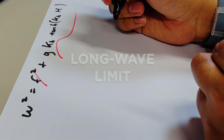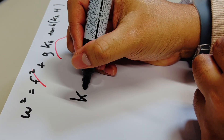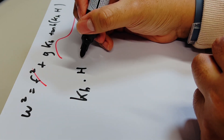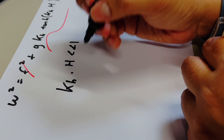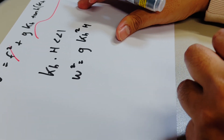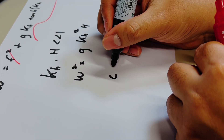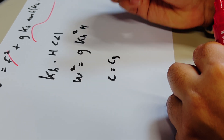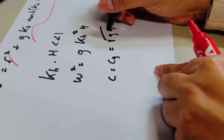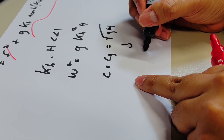In this instance, we can neglect the effect of Coriolis due to our scale. By applying the long wave limit into the relation — where the product of horizontal wave number and depth is less than 1 — the dispersion relation of long waves can be written in simplified form. From this, we get that the phase velocity and group velocity are the same, giving us a non-dispersive wave.